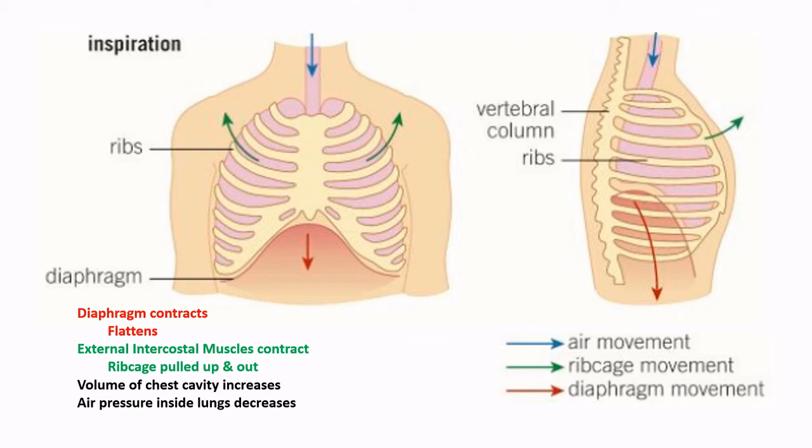As volume increases, air pressure inside the lungs decreases below that of atmospheric pressure, so air is then pushed into the lungs from the outside. Most people think we suck air into our lungs, but we don't. What we do is reduce the pressure in order to allow air to be pushed in from the outside. Breathing in is therefore an active process — it involves muscle contraction and therefore uses energy.